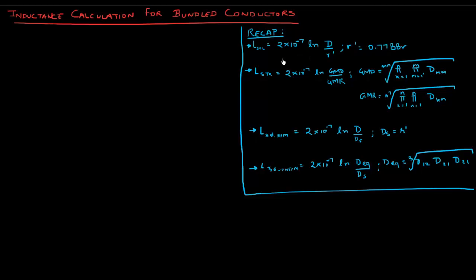The formulations for inductance that we saw after that all followed a similar pattern. You had this constant of 2×10^-7, and then you had ln, and then you had a greater distance on the numerator and the smaller distance on the denominator.